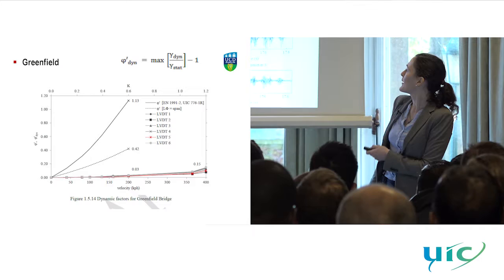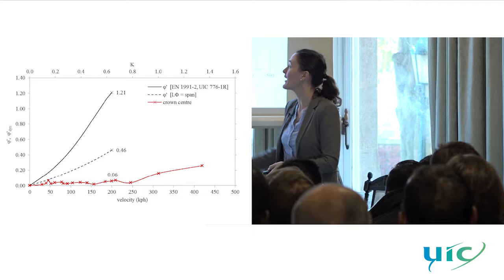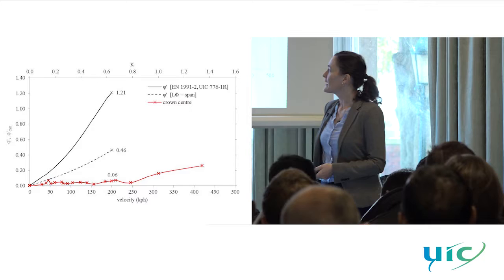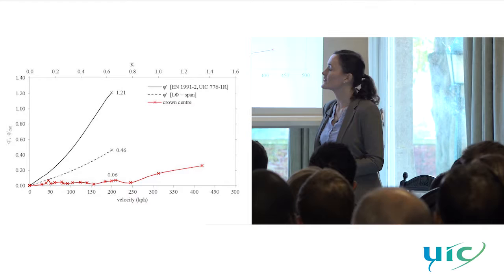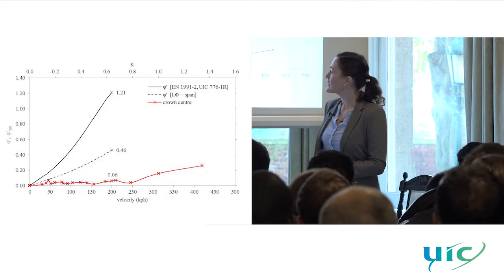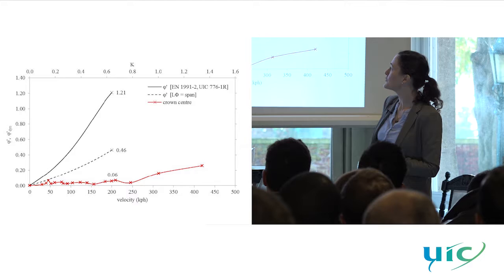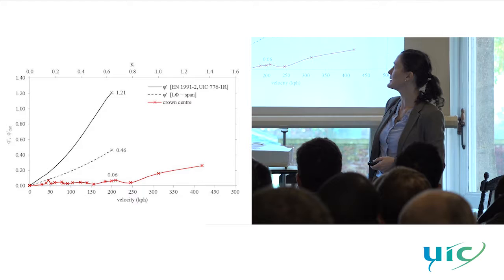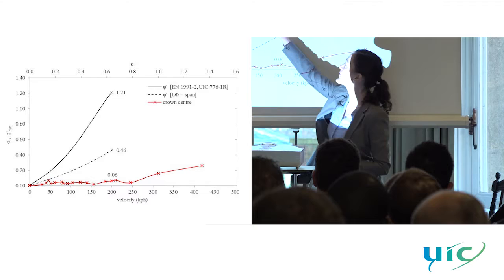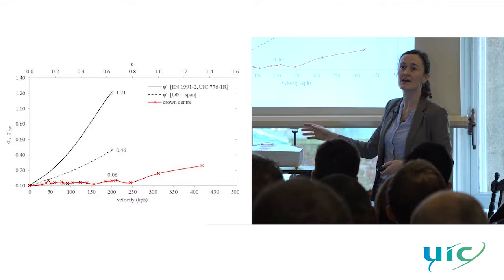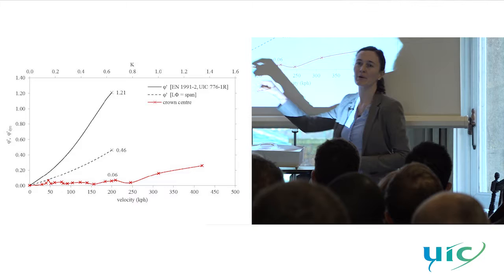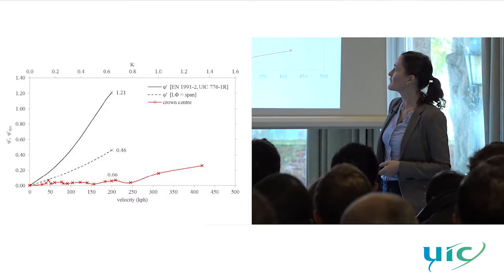Coming back to the data from the bridge with field dynamic data, you can see just how overly conservative the existing approach was. You can see that getting a little bit closer to the value a different determinate length based on the full span would give you, but still well below the values for the simply supported beam approach. The code lines are cut off at 200 km/h, so you can only really apply these dynamic amplification factors at speeds below that.